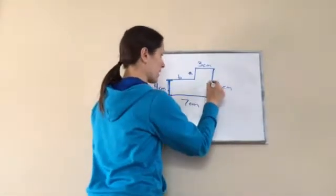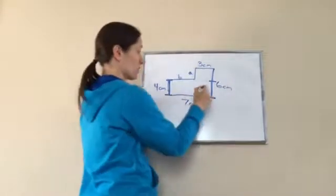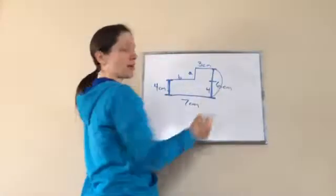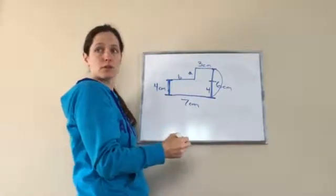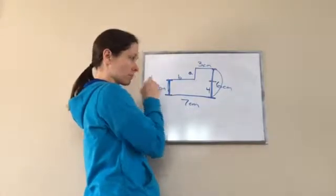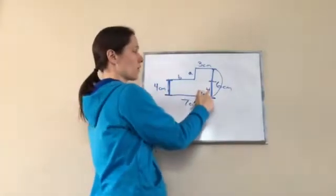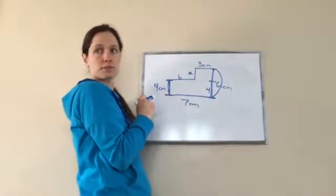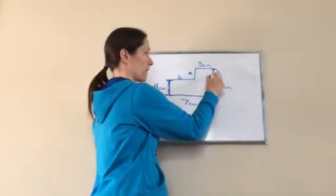So from here to here would be four. And if this whole thing is six, what is from here to here? Four plus what equals the whole part being six? Two. Two.